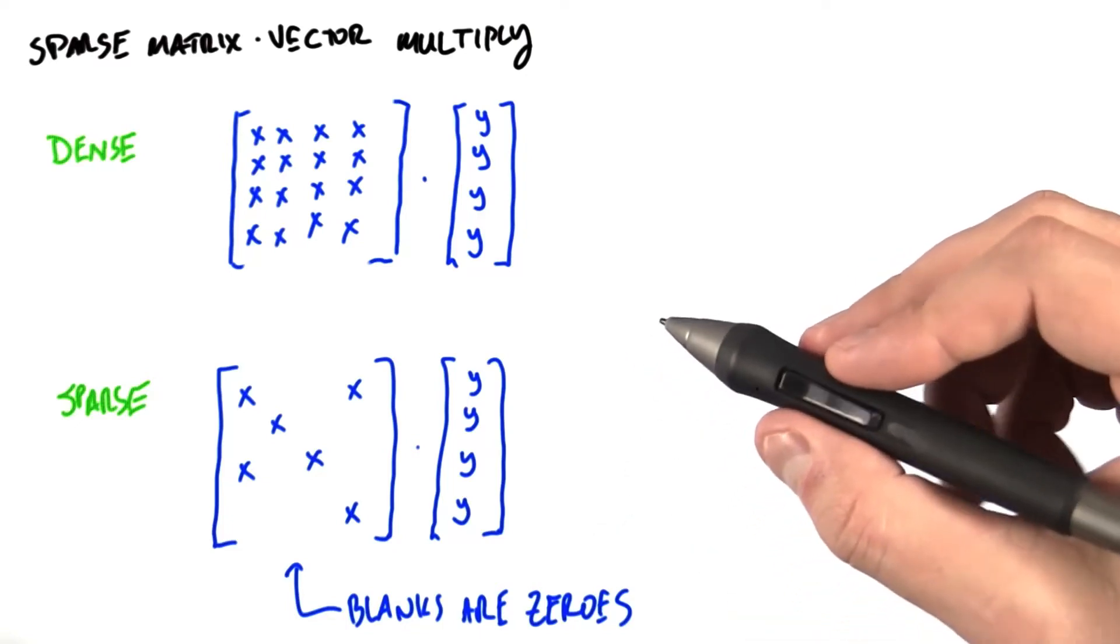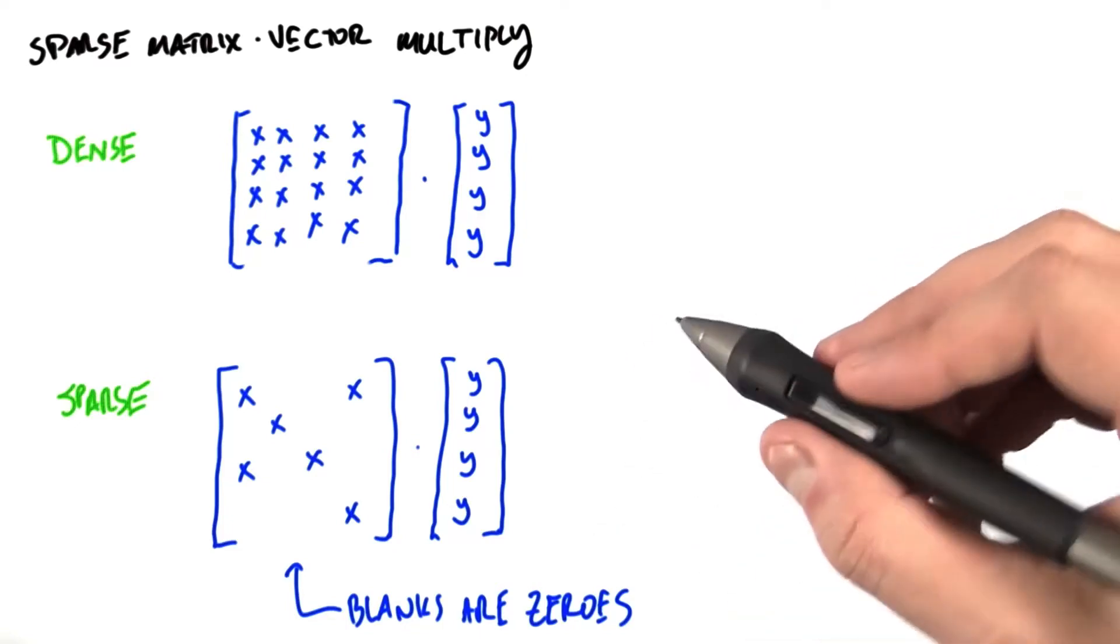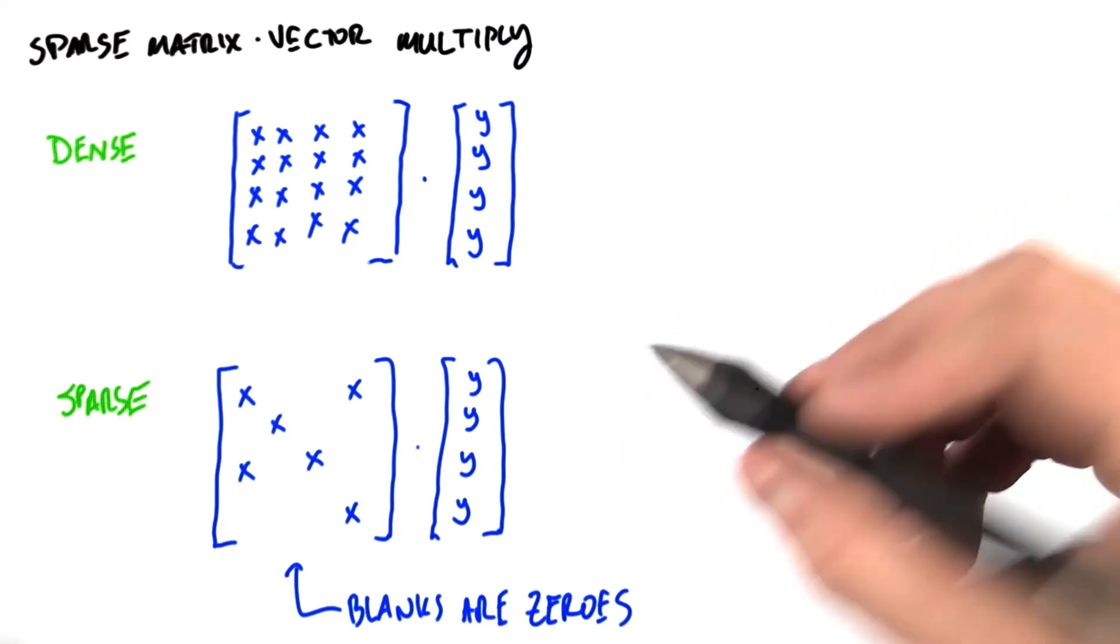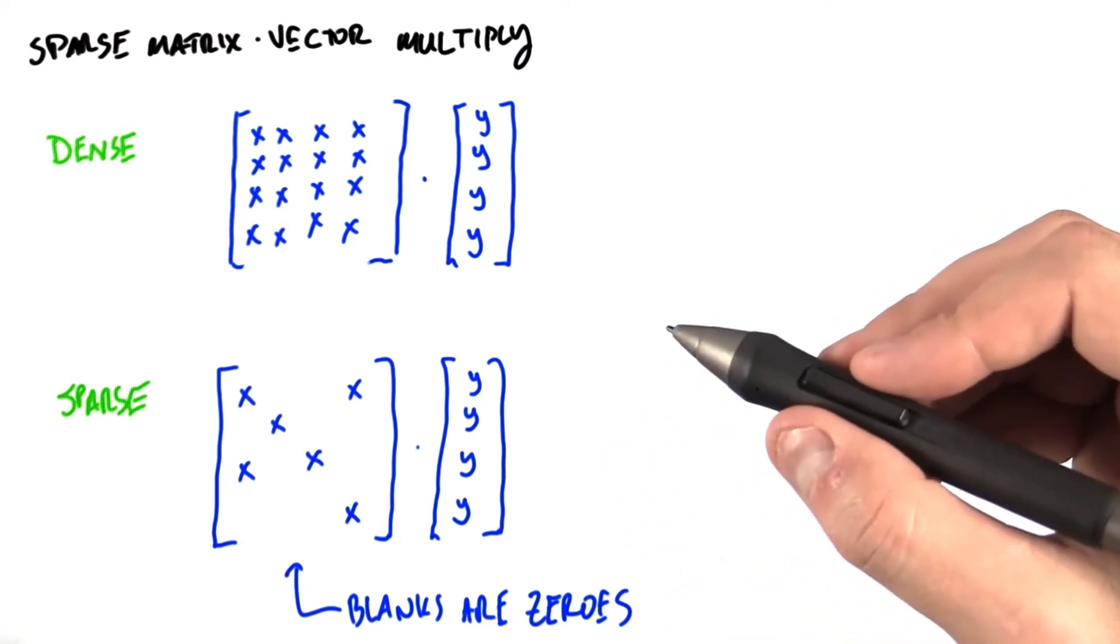In Unit 4, we looked at sparse matrix vector multiply, SPMV, noting that this is one of the most important operations in all of computing.